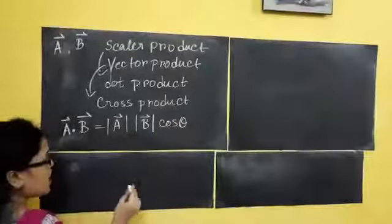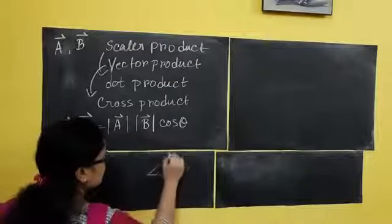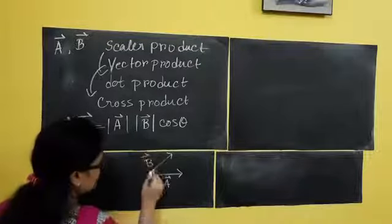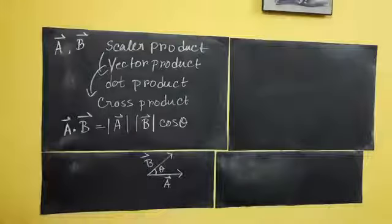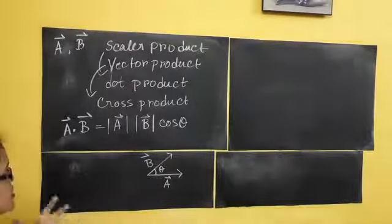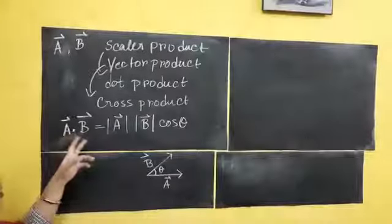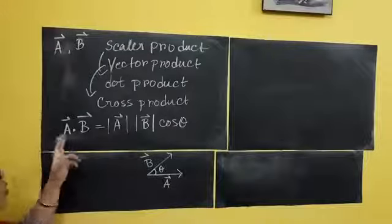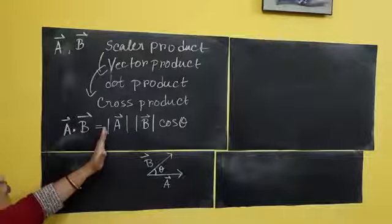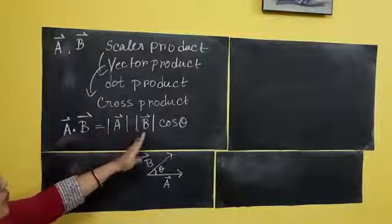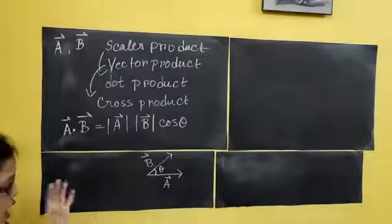Where does theta come from? Suppose one vector is along this direction — this is vector A — and another vector is moving along this direction — this is vector B. So theta is the angle between these two. Now if I want to multiply these two vectors, A dot B equals magnitude of A, magnitude of B, cos theta.